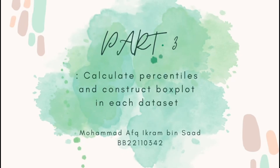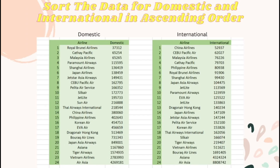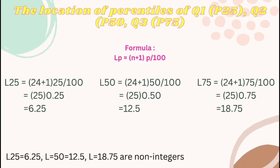Assalamualaikum. Hello everyone, my name is Muhammad Afiq Ikram Milzaad. I am going to present on part 3. First of all, these are the results after the data has been sorted in ascending order. We need to identify the quartiles of the data in order to match the end result of the percentiles calculation. We are going to find the location of the percentiles for Q1 equal to P25, Q2 equal to P50, and Q3 equal to P75.